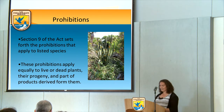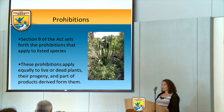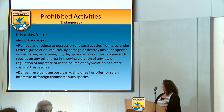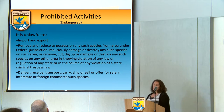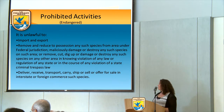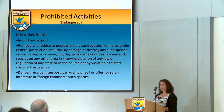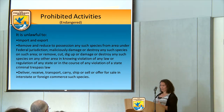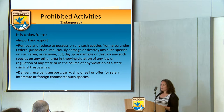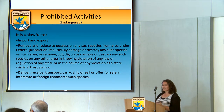We have prohibitions under Section 9 of the Act that apply to any listed species. For plants, these prohibitions apply equally to live or dead plants, their progeny, and any part or products derived from the plant. Under the Act, it's unlawful to import or export a species, to remove or possess a plant from federal jurisdiction, or to damage or destroy said plants on federal property. On private property, take prohibitions don't exist except in the context of violation of a state law or local law or trespassing.